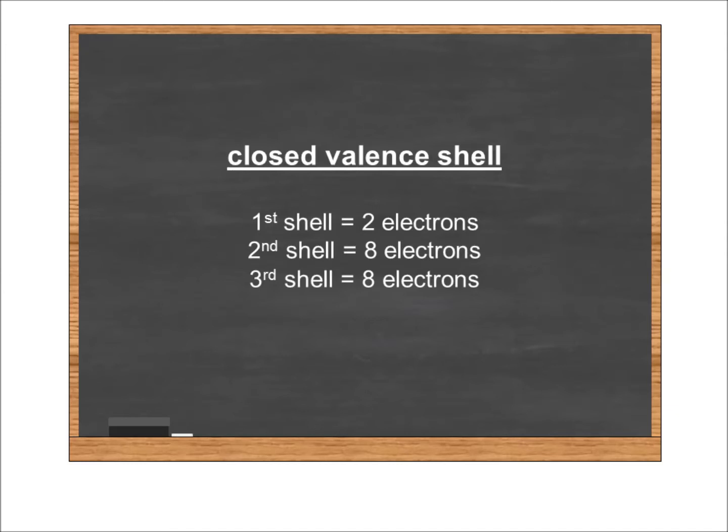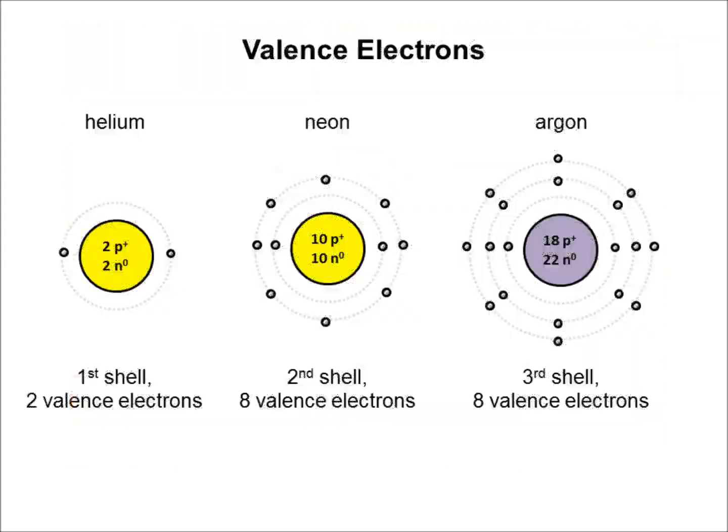If we look at an example set of atoms that have closed valence shells, here we have helium, neon, and argon. Helium has two valence electrons in shell number one, so it's closed. Neon has eight valence electrons in shell number two, it's closed. Argon has eight valence electrons in the third shell, making it closed. These three elements come from a portion of the periodic table referred to as the inert gases or the noble gases.